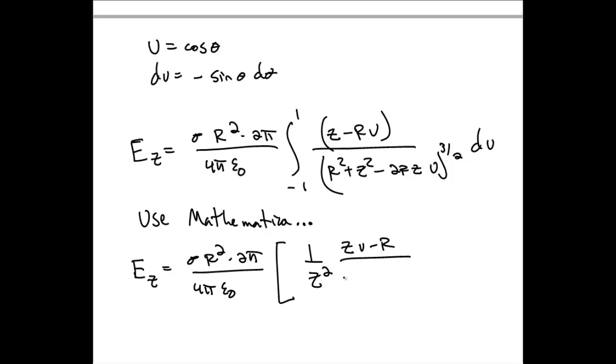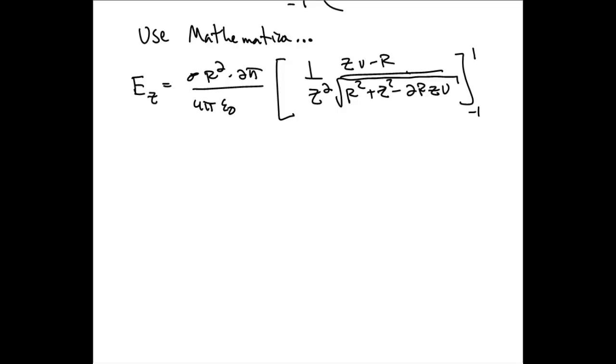At any rate, we get that the integral is equal to this quantity, which we need to evaluate for u equal to negative 1 and 1. So, plugging those boundary values in, we get the combinations.